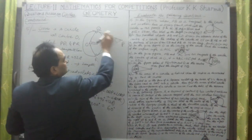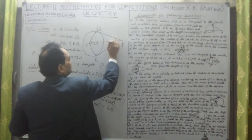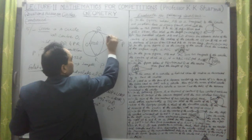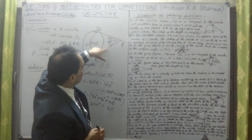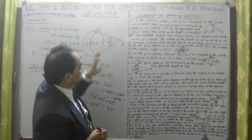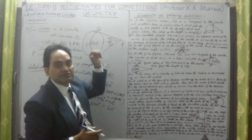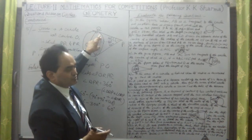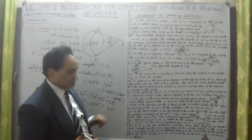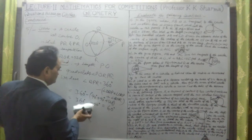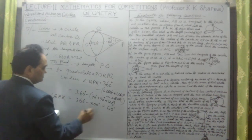The two sides from P are equal and these triangles are congruent by RHS, so angle QPO equals angle RPO equals 30 degrees each, totaling 60 degrees. Therefore angle QPO equals 30 degrees.